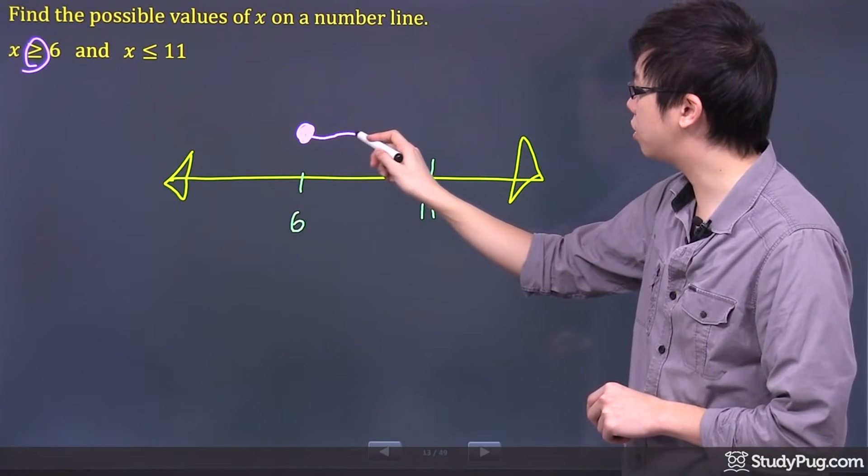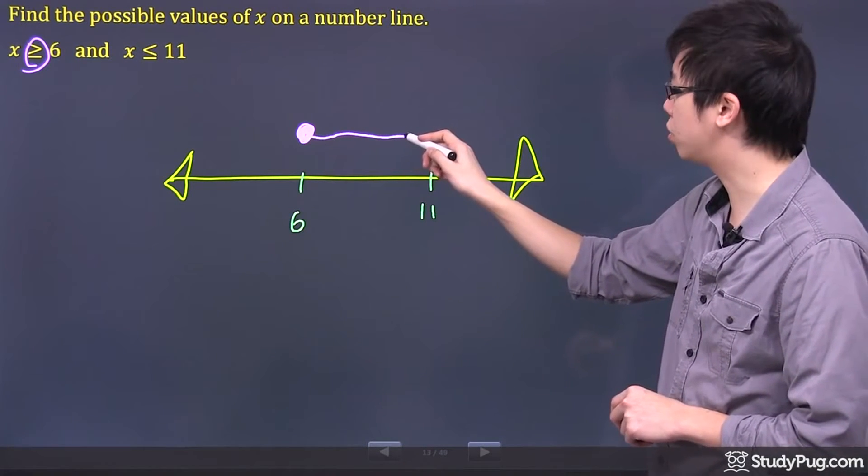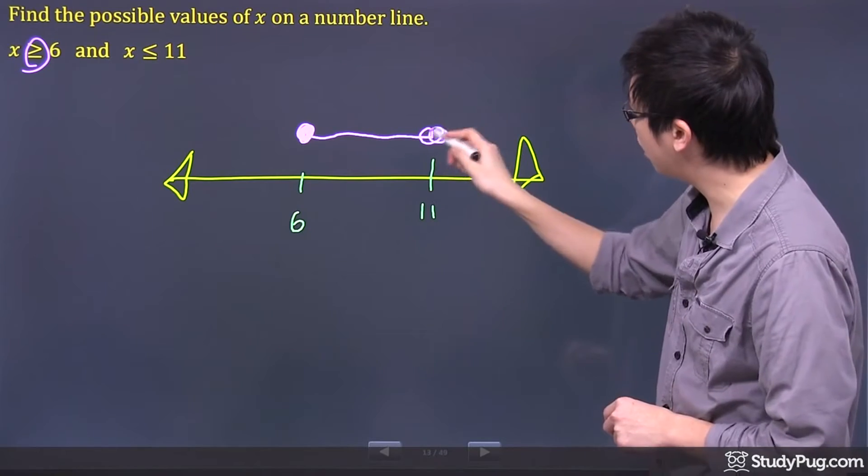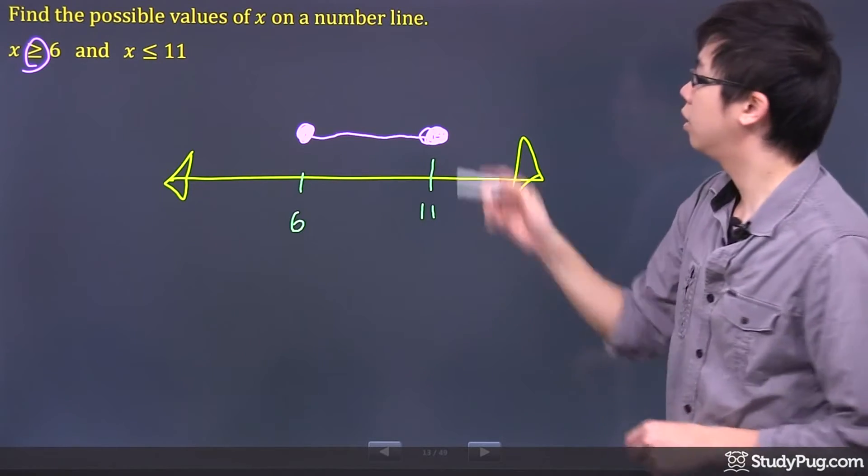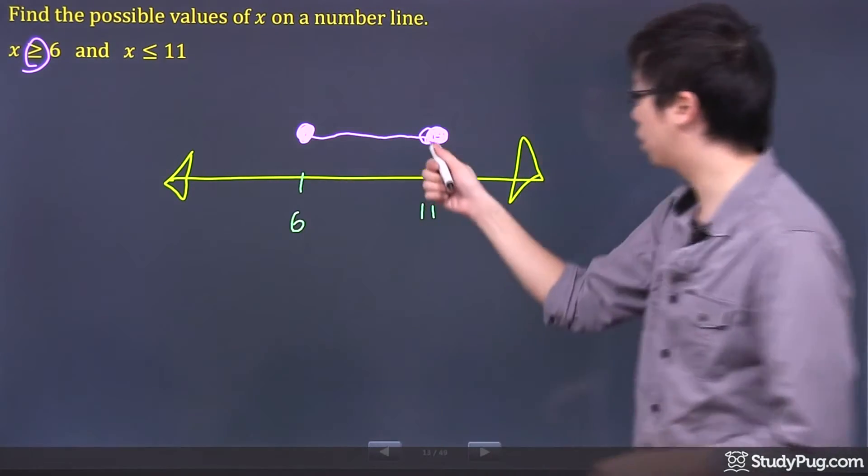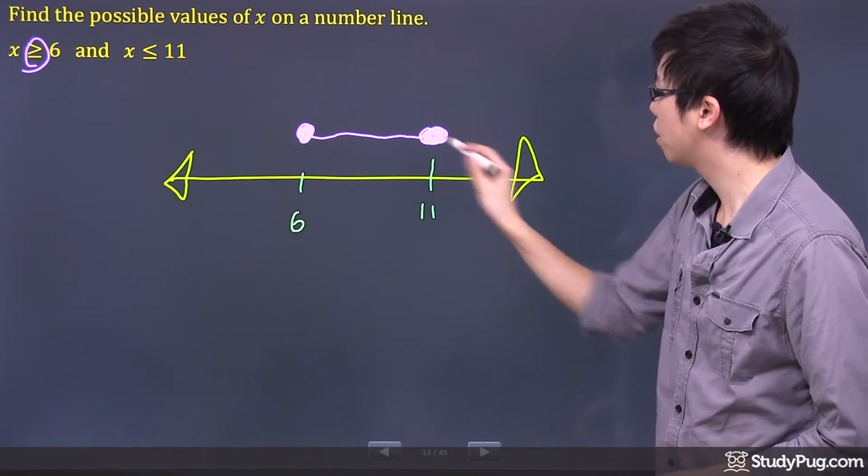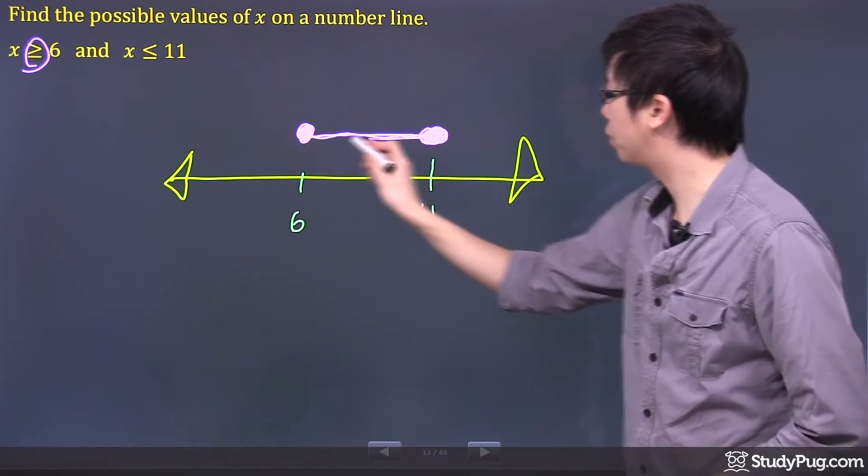It's going to go greater than 6, it shouldn't be curly though, it should be straight, but at the same time it's also less than or equal to 11. So that's why I put a closed dot right here as well. So there's your number line right there.